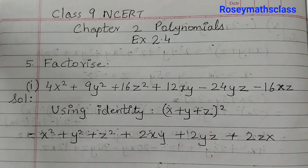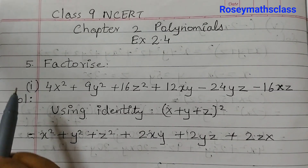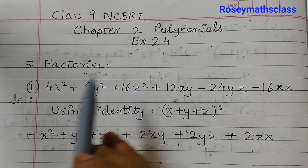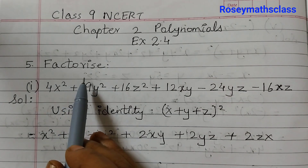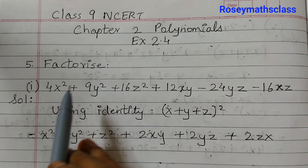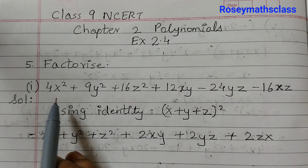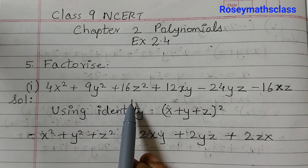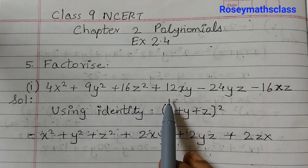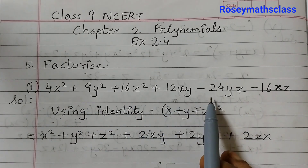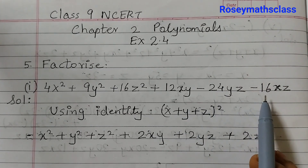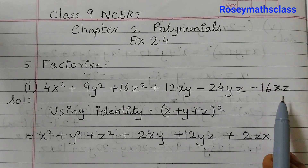Hello students. In this video we shall discuss question number 5 of exercise 2.4 — factorize. There are two parts to this problem. The first one is 4x² + 9y² + 16z² + 12xy − 24yz − 16xz.